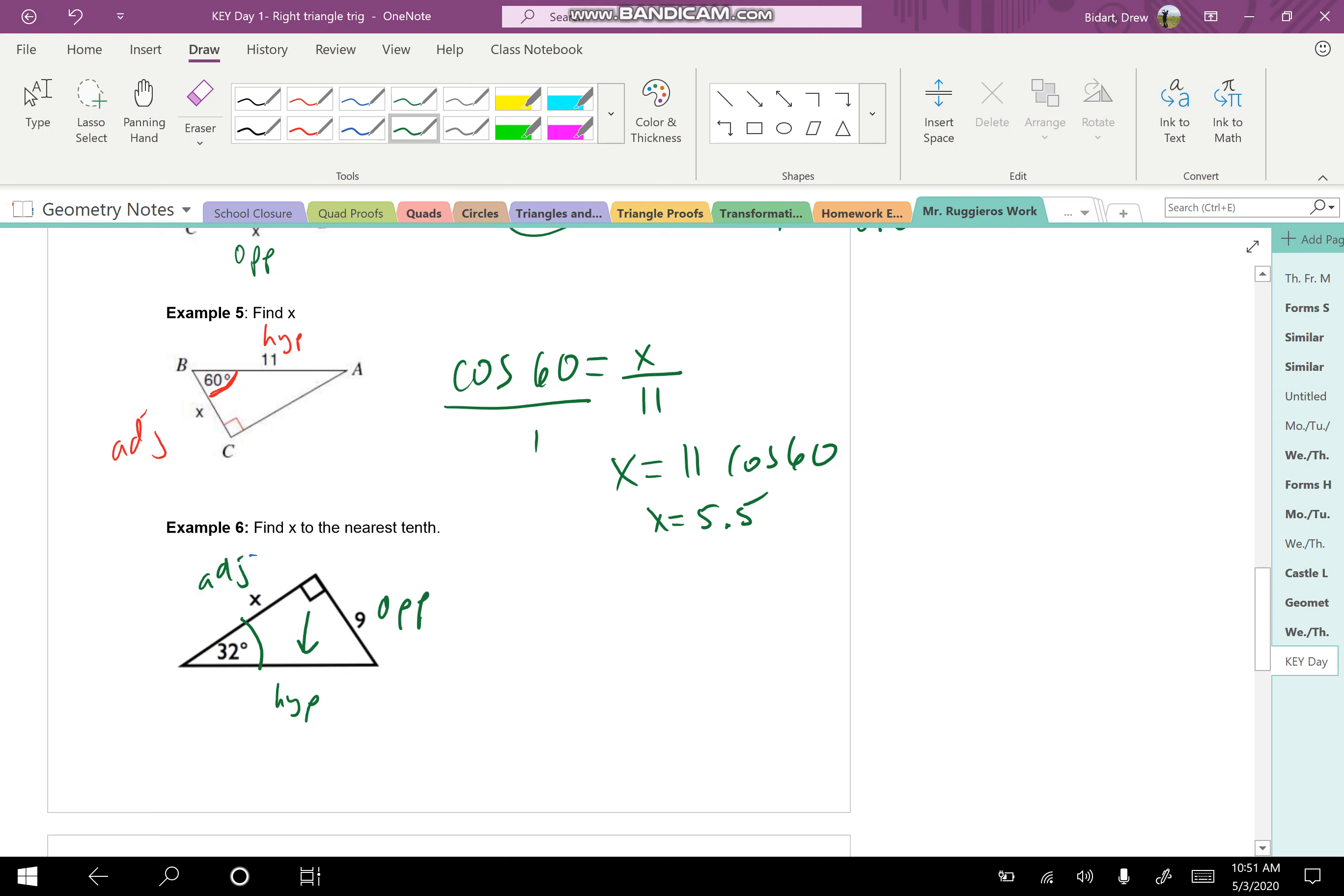Okay, in example number 6, the angle is the 32. So keep in mind where the hypotenuse is here. Don't be fooled by this. Again, the hypotenuse is across from the 90. So actually this side is the hypotenuse. 9 is opposite the angle. X is adjacent to the angle.